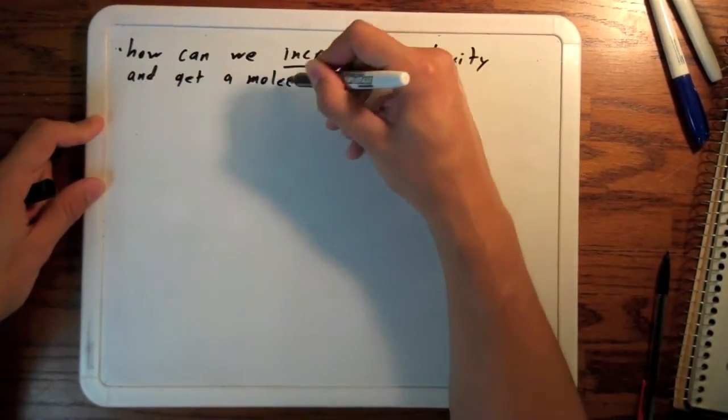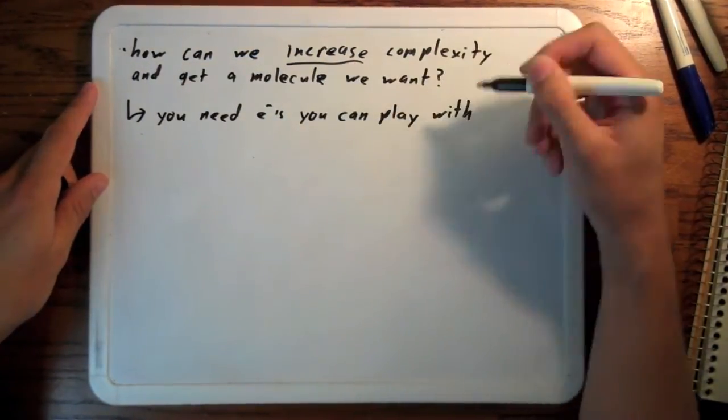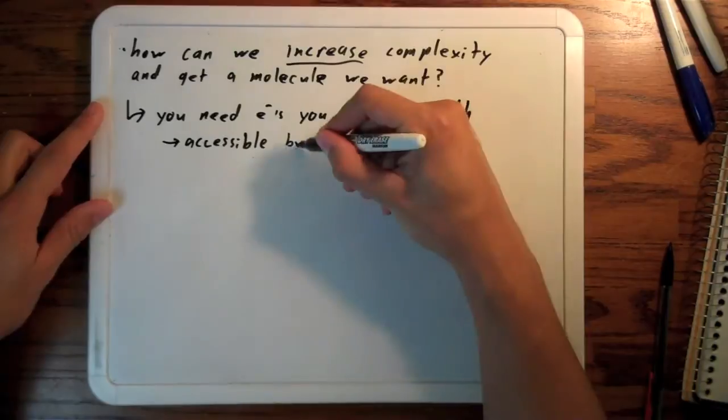So as you might have guessed, what we want to do is increase complexity, or at least not drastically decrease it, to get what we want. To do that, we'll need bonds and electrons we can play with. Not like pentane.